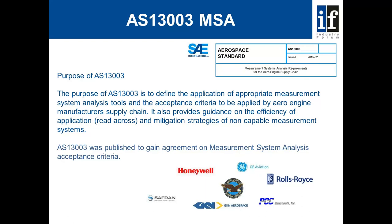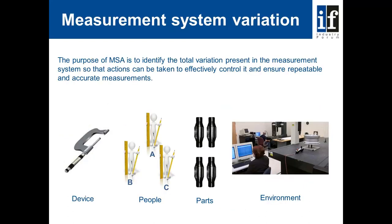AS13003 was published to gain agreement on measurement system analysis acceptance criteria. The aerospace industry is highly reliant on the inspection and measurement of parts and assemblies to ensure that they meet drawing requirements. Ensuring that the measurement systems are capable and repeatable is vital to the inspection process. The purpose of MSA is to identify the total variation present in the measurement system so that actions can be taken to effectively control it and ensure repeatable and accurate measurements.